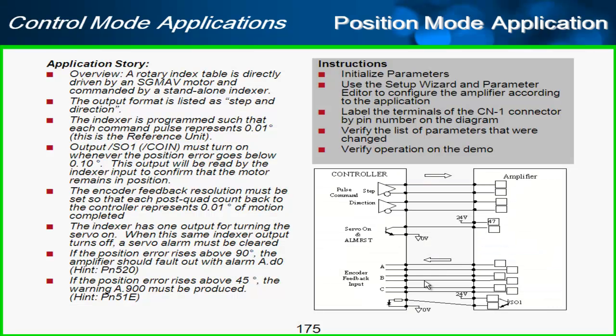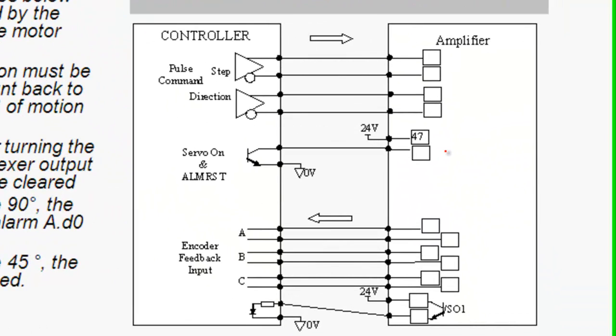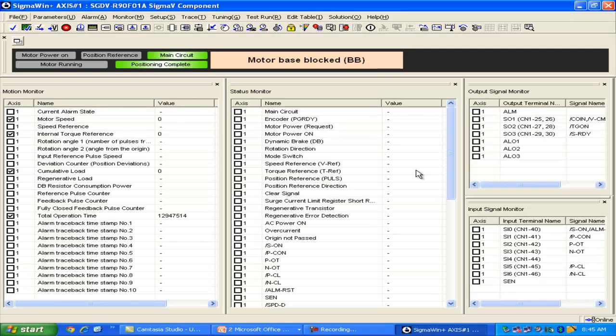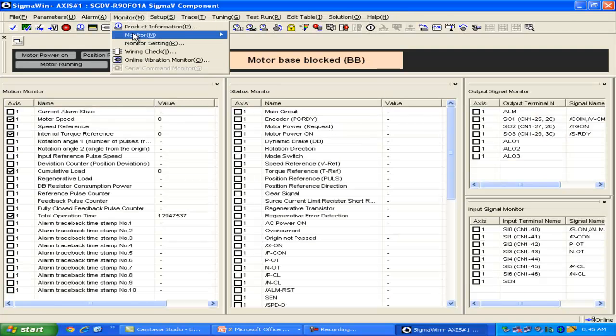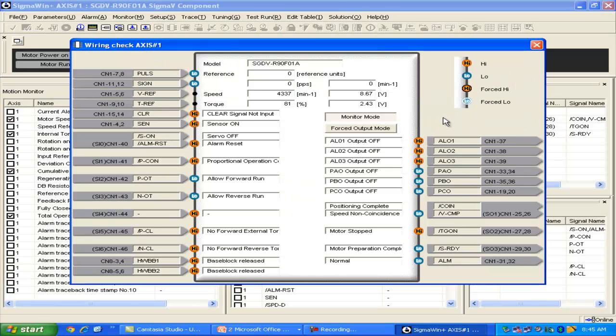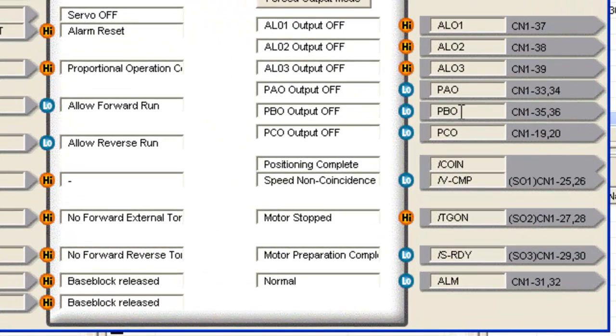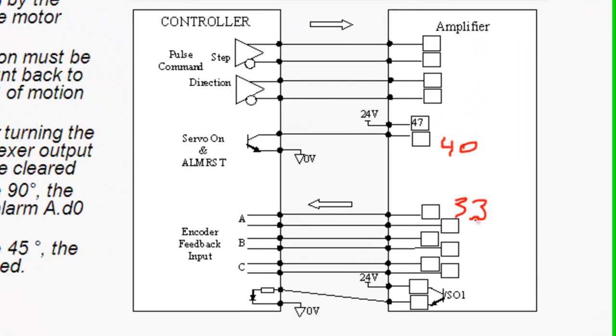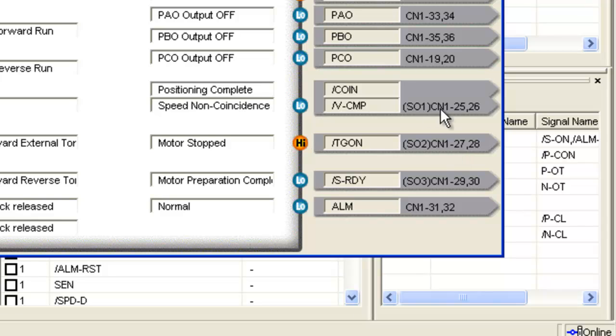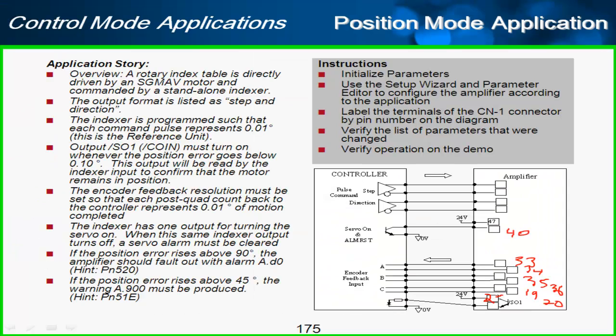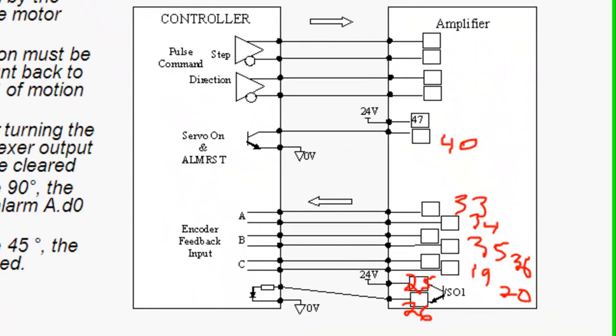So let me go through here and label the terminals. Servo on and alarm reset. This is going to be wired to PIN 40, CN1. Encoder feedback. I'd always refer to the wiring check under the monitor if you don't know the PIN numbers. Encoder feedback is over here, P-A-O, P-B-O, P-C-O. So that was 33, 34, 35, and 36. And the last one here, 19 and 20. And then output SO1 right here is PIN 25 and 26. And it's just good practice to have your PIN numbers labeled so that when you go to wire it, you've got it all in one place and you know exactly where to wire it to.